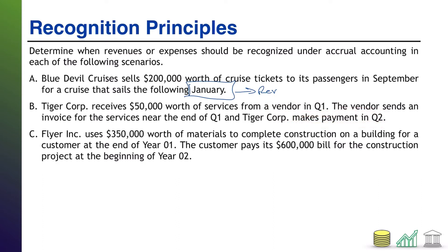Just like revenue recognition, expense recognition says you recognize expenses when the cost is incurred, regardless of when you pay for it. You might pay for it now, you might pay for it later — regardless, when the cost is incurred, that's when the expense happens. The vendor performed the services in Q1. Therefore, the expense is recognized in Q1, even though the payment doesn't take place until Q2.